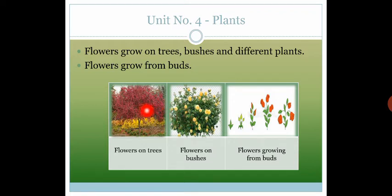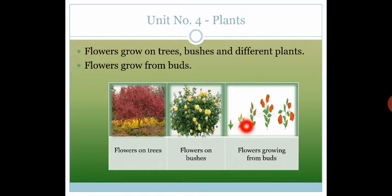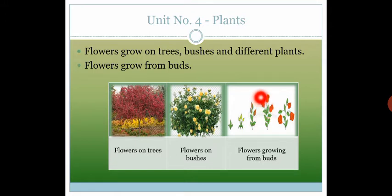Flowers grow from buds. Look at this picture — this is a bud. اردو میں اسے 'کلی' کہتے ہیں۔ جیسے جیسے یہ grow کرتی چلی جاتی ہے، اس میں سے flower نکلتا چلا آتا ہے — the flower grows out from inside the bud.